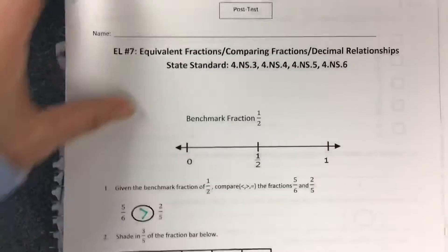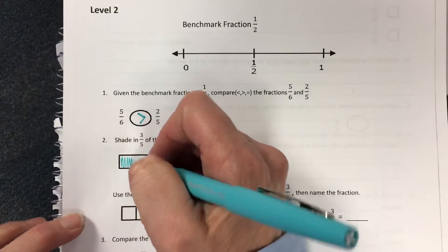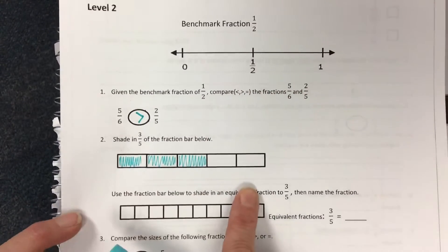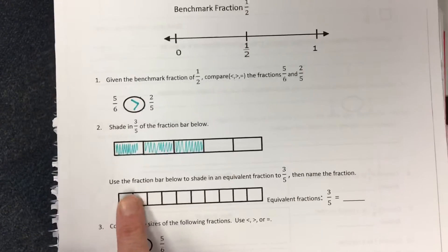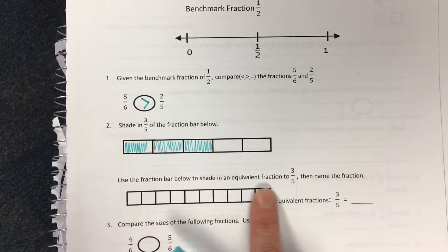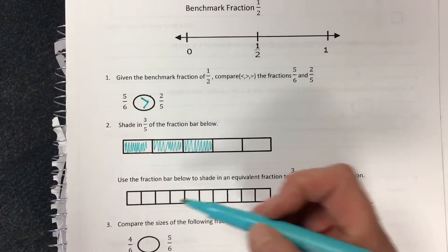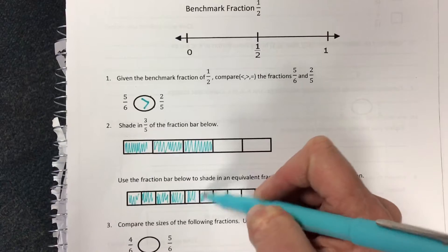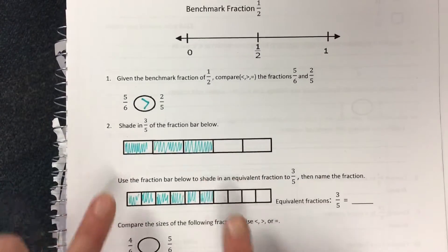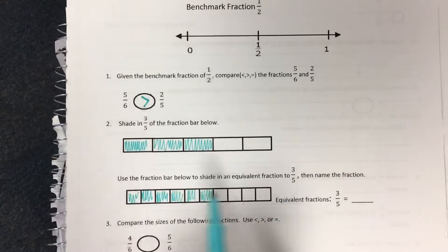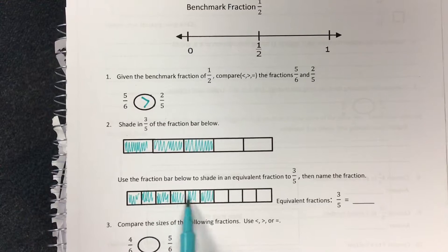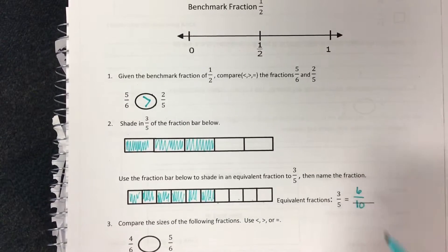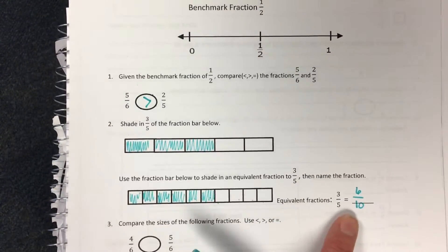Number two says to shade in three-fifths of the fraction bar below. Three out of the five squares should be shaded in. The next part says to use the fraction bar below to shade in an equivalent fraction to three-fifths and then name the fraction. Students can look and shade in the same amount. Six out of ten parts are shaded, showing that three-fifths is equivalent to six-tenths.